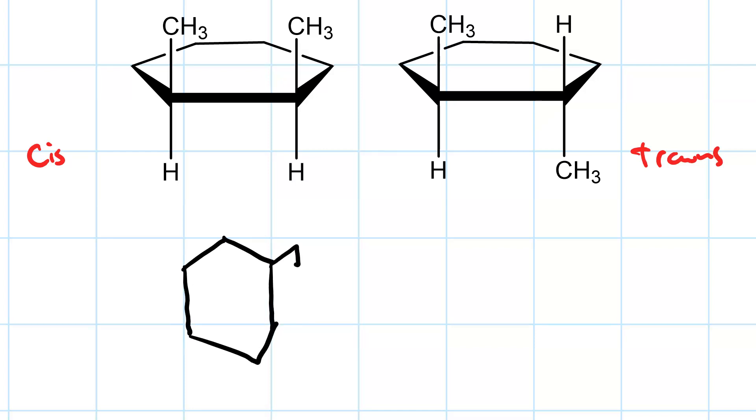Here's the cis with both of my methyl groups going up. And here is the trans with the methyl group in the more counter-clockwise position going down. That's this one. And the clockwise methyl group going up.